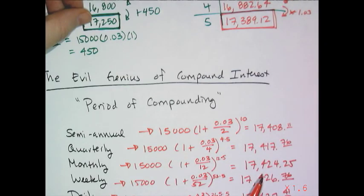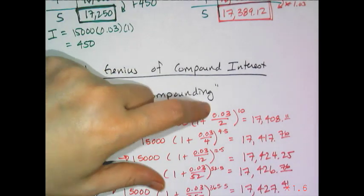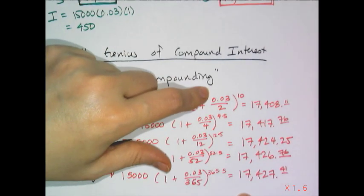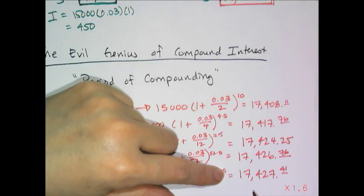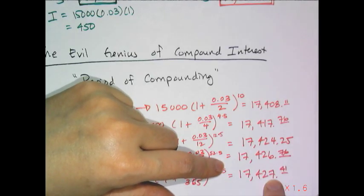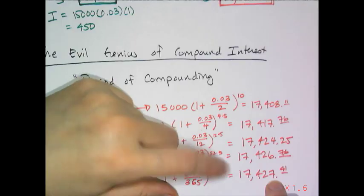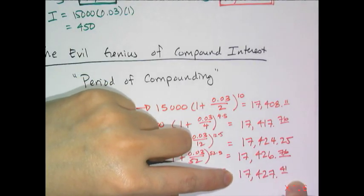Compared to simple interest at $17,250, the differences don't seem like a big deal in the short run. But if the loan were out for 10 or 15 years, the difference in compound interest would be much larger.